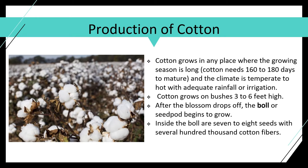The cotton gin changed the process so that 50 pounds of cotton a day could be processed, when only a handful of pounds had been produced before. By 1859 the US was producing 4.5 million bales of cotton, and it was the leading export.